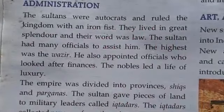The sultan gave pieces of land to military leaders called iqtadars. The iqtadars collected revenue from this land. The military head was the Ariz, who appointed soldiers and maintained records. The Kazi was the head of justice.